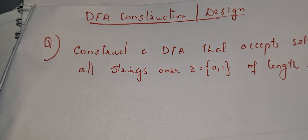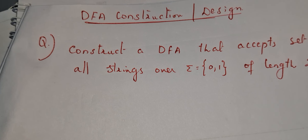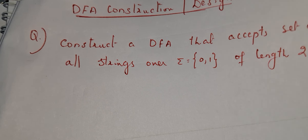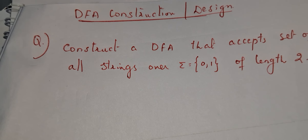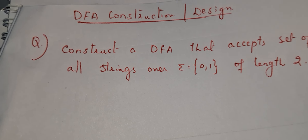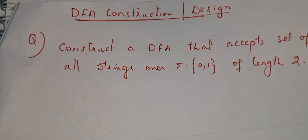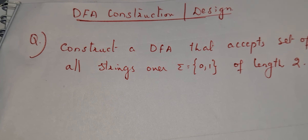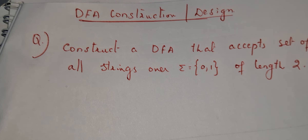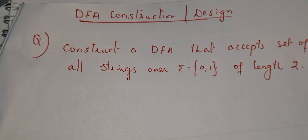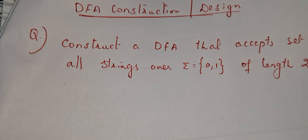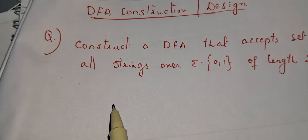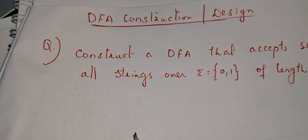In the last video we studied what a DFA is. A DFA is an automata belonging to the category of finite automata without output, represented by five tuples: Q, sigma, delta, q0, and F. The transition function of a DFA maps a state on an input symbol to only one state — that is, Q cross sigma equals Q.